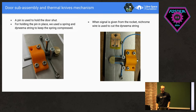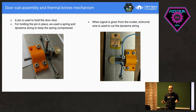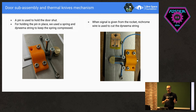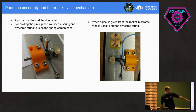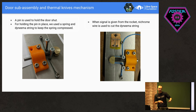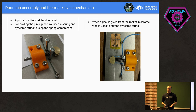Moving on to the door subassembly and thermal knives mechanism. Now we have the rail and the pusher subassembly — we need to design the door too. You need two things: a mechanism to hold the door closed, and a mechanism to open the door. On the electronics side, you need a way to attach the door and then cut it on signal. We used a pin puller mechanism with a compression spring. To hold the pin in place and secure the door closed, we used Dyneema string. To cut the Dyneema string so the door opens and the satellite is deployed, we used thermal knives — basically nichrome wire that gets heated and cuts the string.